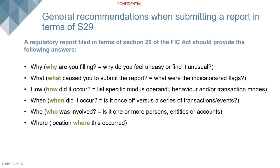Moving to Section 29 reports: suspicious and unusual transaction or activity reports, and terrorist financing activity or transaction reports. These reports are based on suspicion. When completing them, you need to provide as much information as possible, because the FIC analysts were not present when you formed your suspicion. They need to understand why you feel the transaction or activity is suspicious or unusual — tell them the why: what did you find unusual, how did it occur, when did it occur, who was involved, where did it occur.